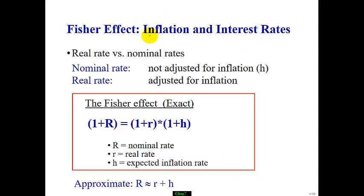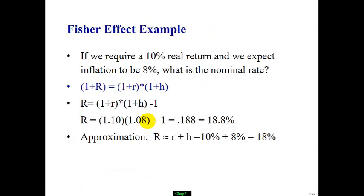Some floating rate bonds address inflation risk. Inflation is important because it affects our rate of return. The nominal rate is not adjusted for inflation, while the real rate is adjusted. For example, if you make a nominal return of 20% and inflation is 5%, the real rate is approximately 15%. Using the Fisher effect exact format to convert: if you require a 10% real rate and expect 8% inflation, then (1 + nominal rate) = 1.10 × 1.08, giving a nominal rate of 18.8%. Using the approximate approach, it is roughly 18%.